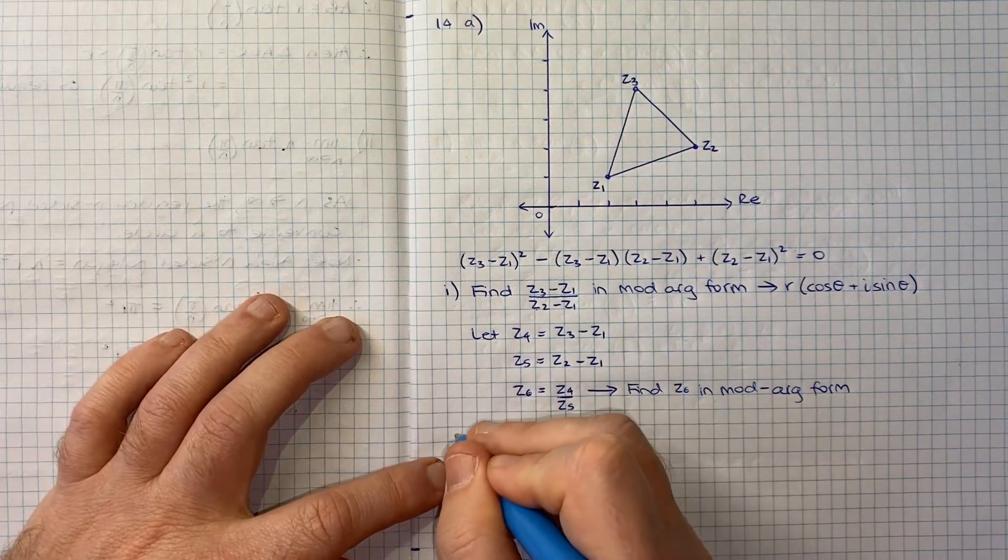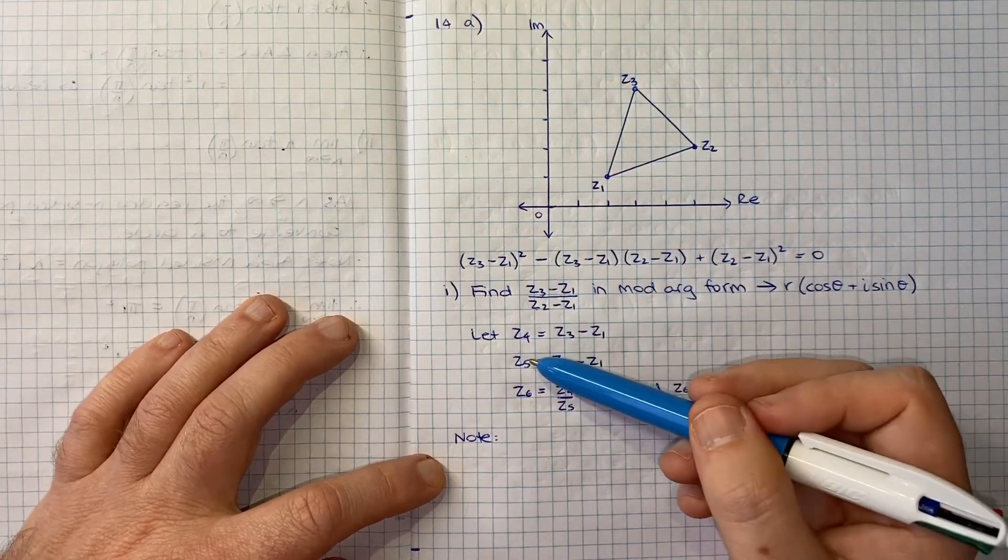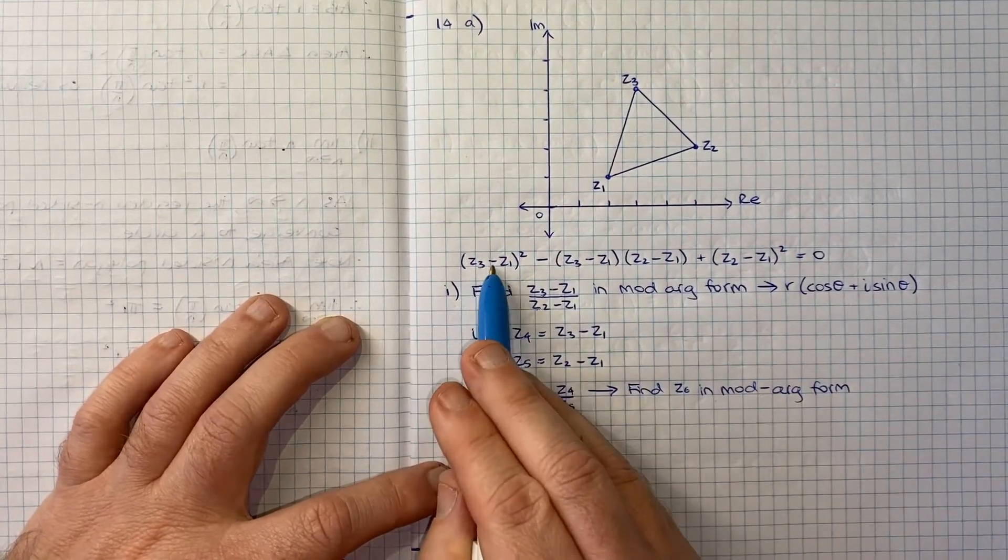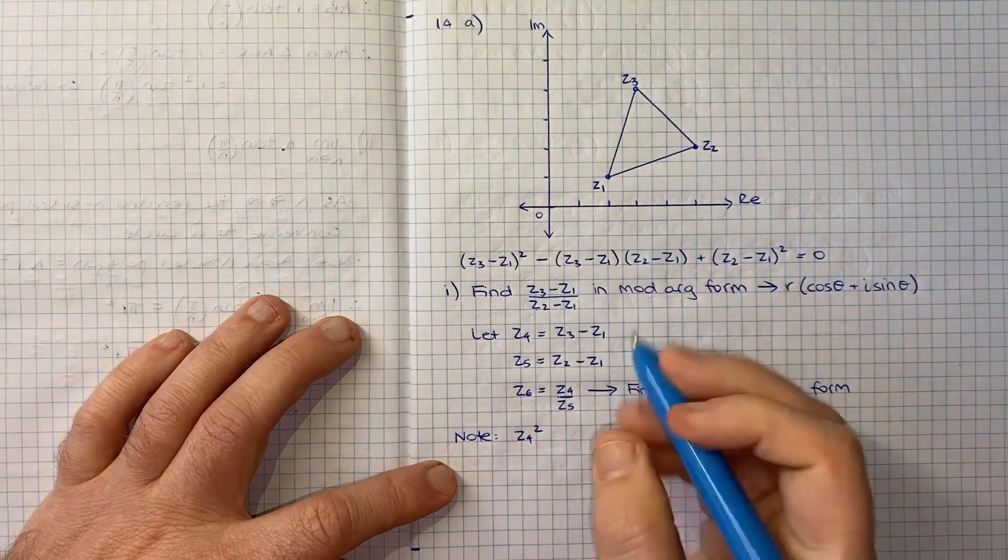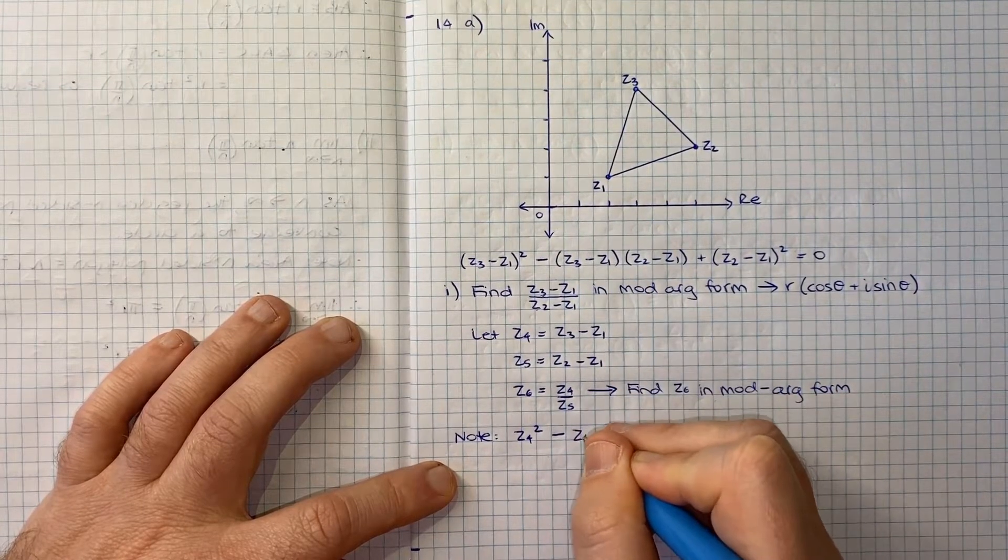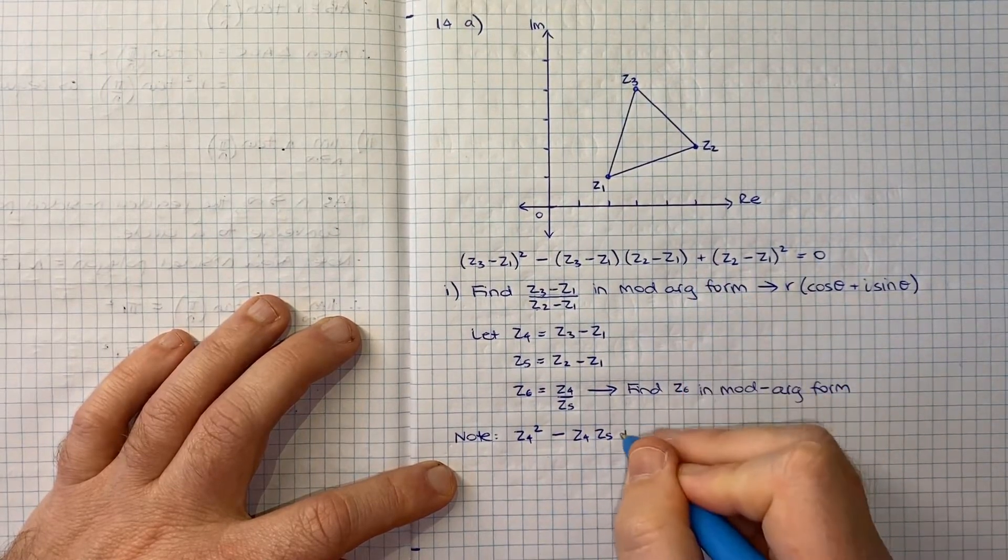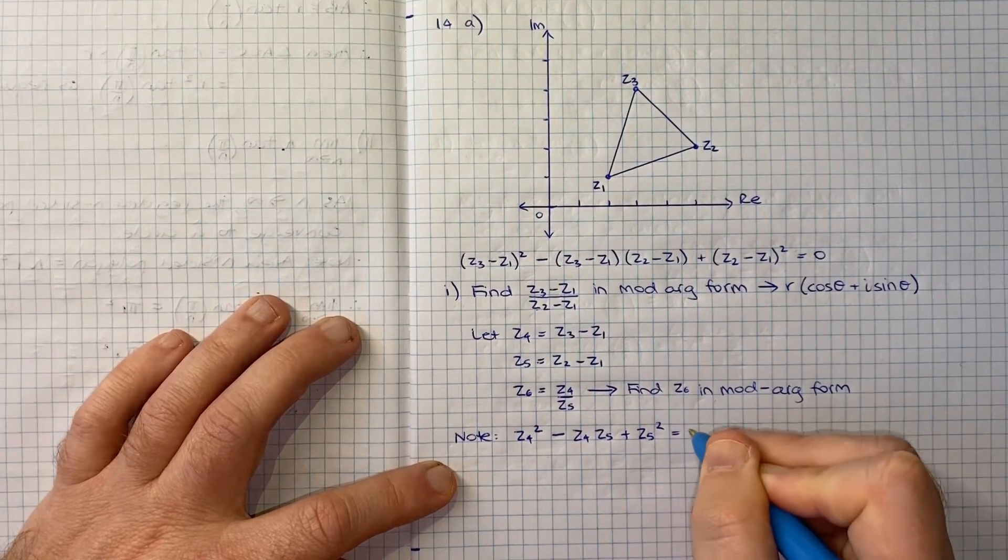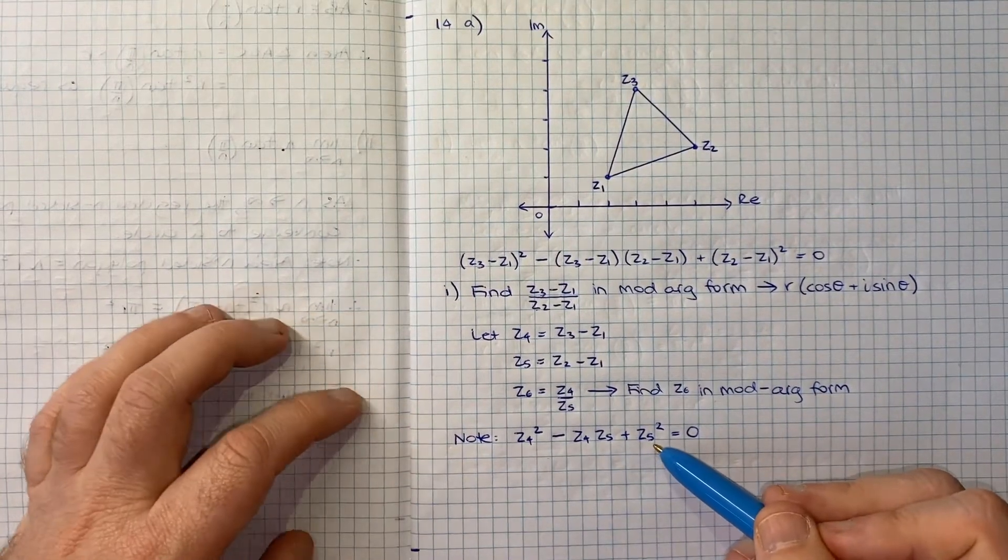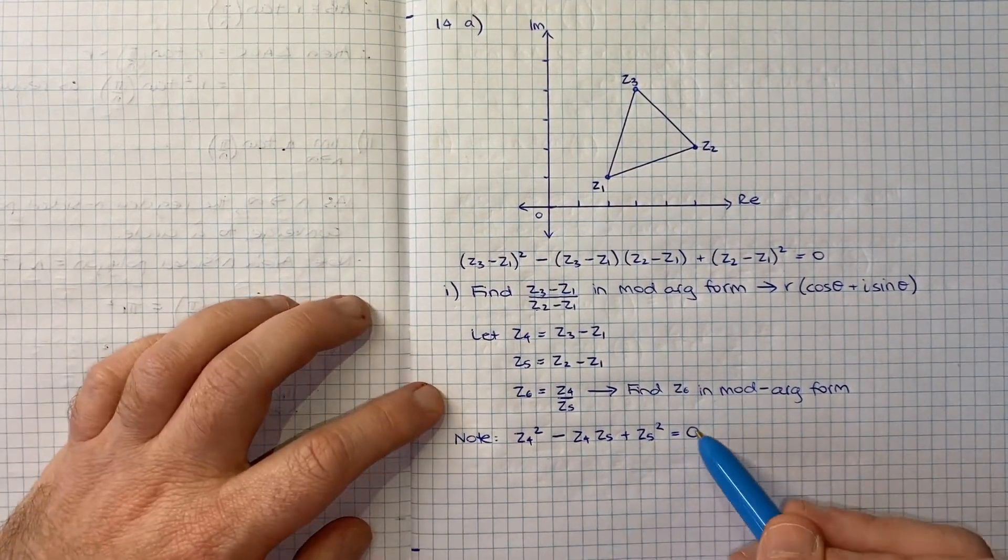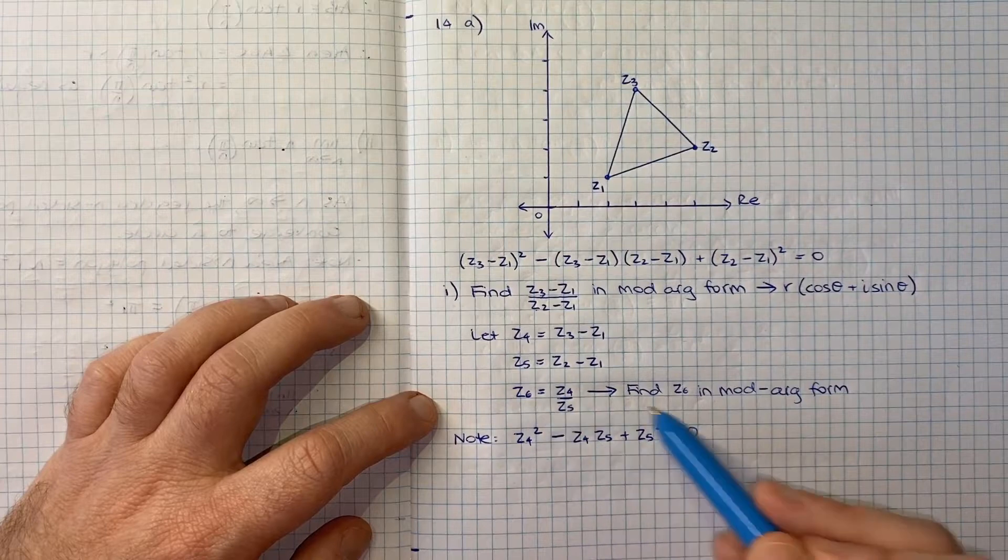I think what we can note given our definitions is that if we take this result, we can now rewrite it in terms of what we've defined. So Z3 minus Z1 for us is Z4, so we can say Z4 squared minus Z4 times Z5 plus Z5 squared equals zero.